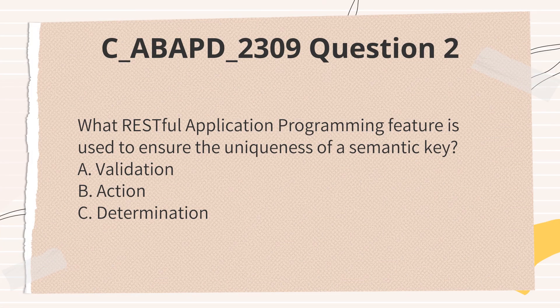What RESTful application programming feature is used to ensure the uniqueness of a semantic key? A. Validation. B. Action. C. Determination.